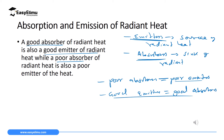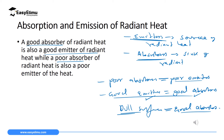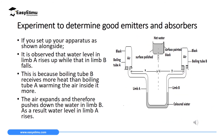Matte black surfaces are good absorbers of radiant heat, and since good absorbers are also good emitters, matte black surfaces are also good emitters. Shiny surfaces are poor absorbers and therefore also poor emitters. Since radiant heat is an electromagnetic wave and behaves like light, if light can be reflected by shiny surfaces, radiant heat can also be reflected by shiny surfaces.